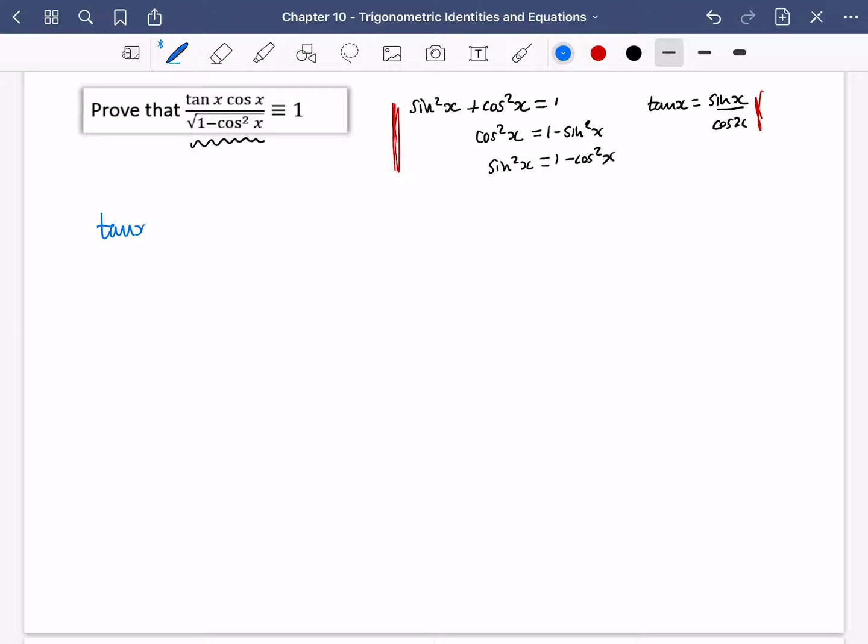So we have tan x cos x all over the square root of 1 minus cos squared x. Well, I immediately look at this denominator and I know that 1 minus cos squared is sin squared. So I'm going to use that.